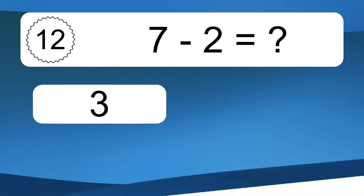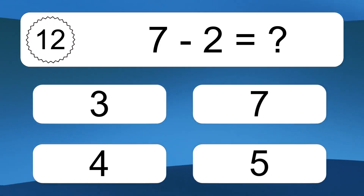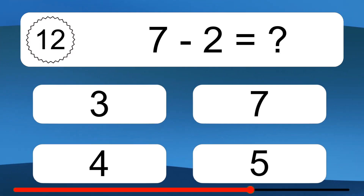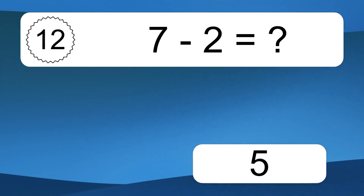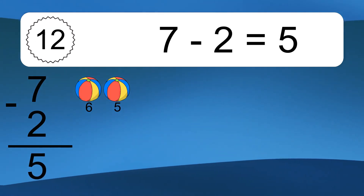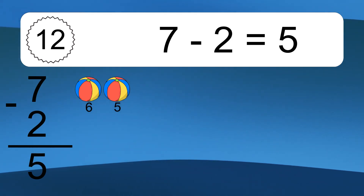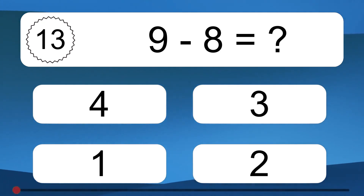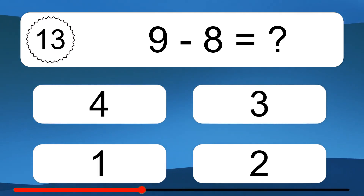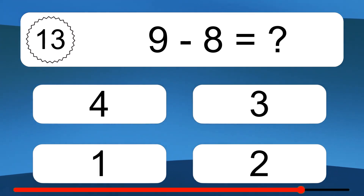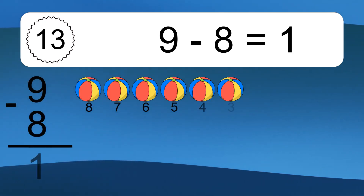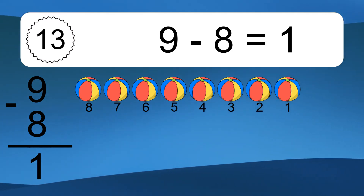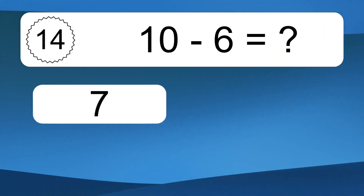7 minus 2 equals what? 7 minus 2 equals 5. Let's count it. 6, 5. 9 minus 8 equals what? 9 minus 8 equals 1. Let's count it. 8, 7, 6, 5, 4, 3, 2, 1.